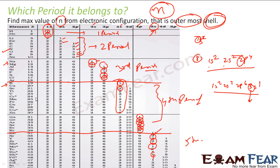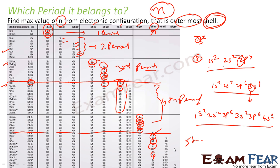Let's take potassium, atomic number 19. Its electronic configuration is 1s², 2s², 2p⁶, 3s², 3p⁶, 4s¹. If you don't know how to write electronic configurations, please watch my previous video on atomic structure. Looking at this configuration, the maximum value of n is 4, so potassium is in the fourth period.